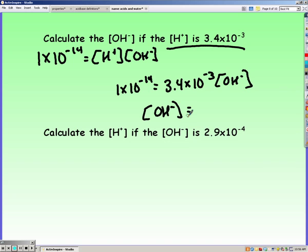Dividing, I get my hydroxide ion concentration to be 2.94 times 10 to the negative 12th and that's going to be molarity.